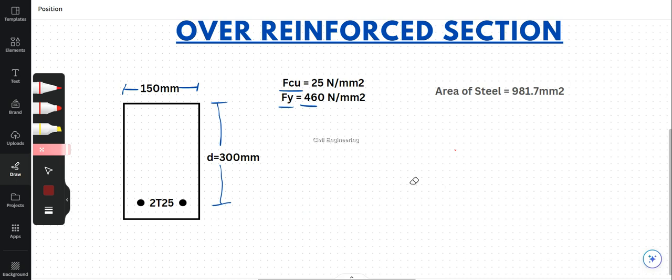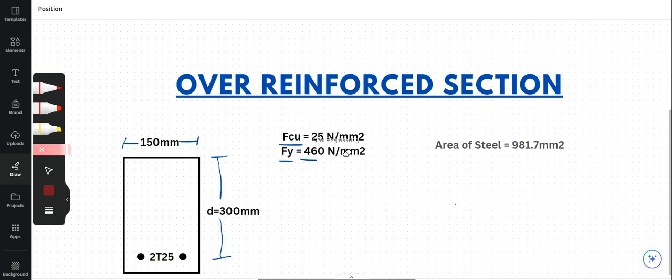It means the amount of reinforcement supplied is more than what is needed. The reinforcement can have more strength than the concrete section can handle — meaning the maximum compression is lower than the maximum tensile force which can be taken from the reinforced section.